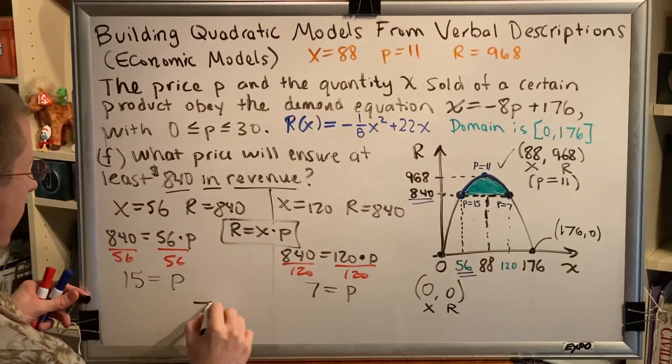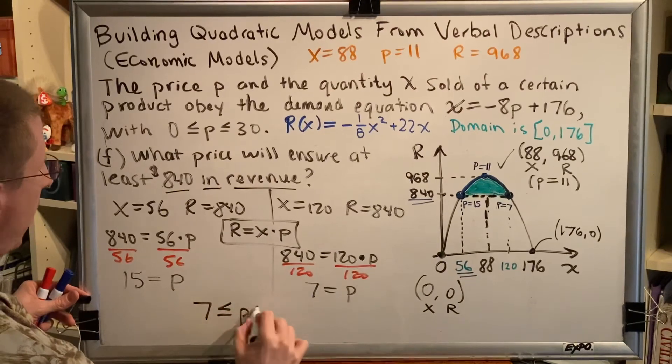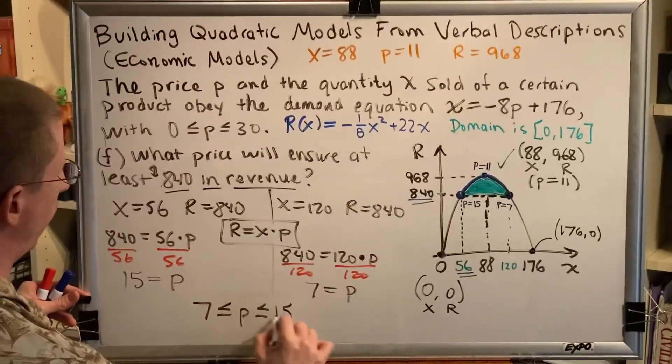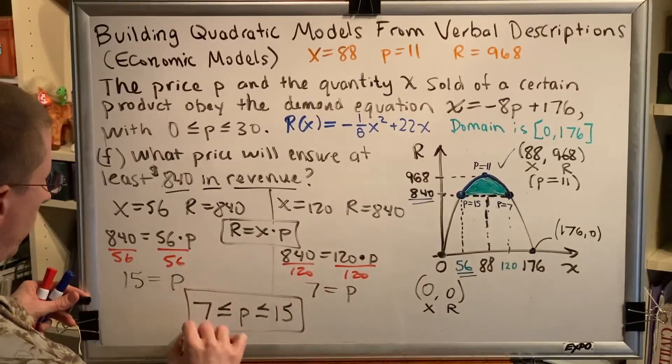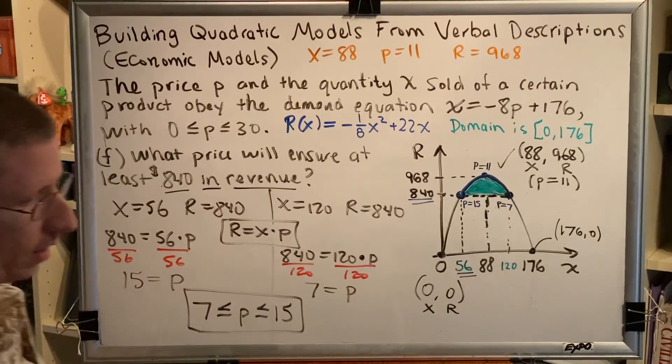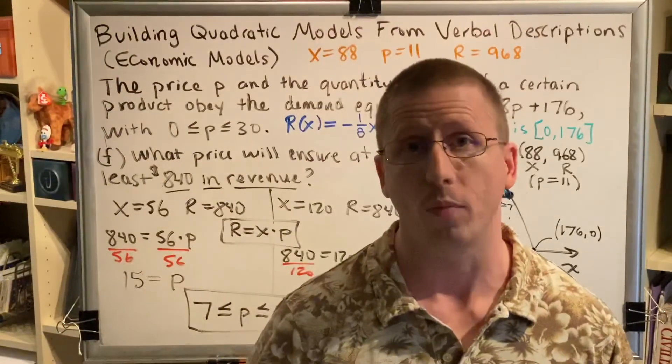So, we can write our final answer as $7 ≤ p ≤ $15. This is the end of part f, and this is also the end of this rather long problem.